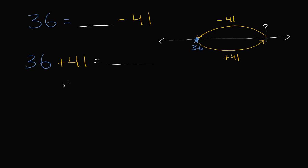So what's 36 plus 41? Well, we could add our tens, let's add our ones first. So we have six ones plus one one. That is seven ones. And then we have three tens plus four tens, which is seven tens. Seventy-seven. So this is seventy-seven. And we're done.